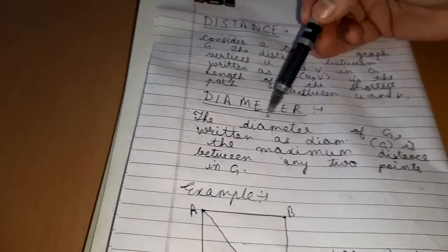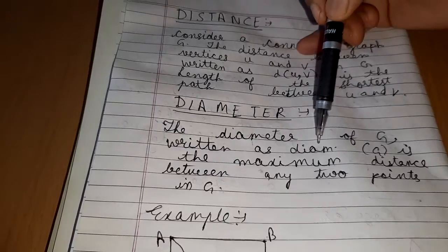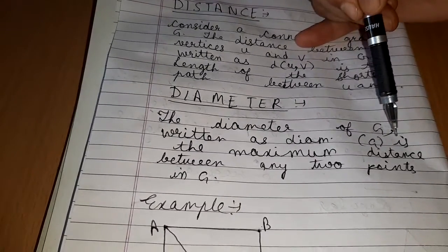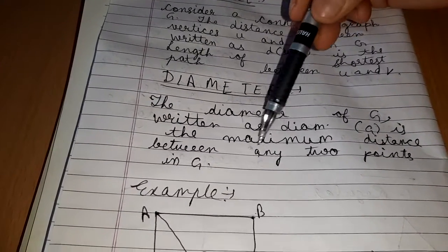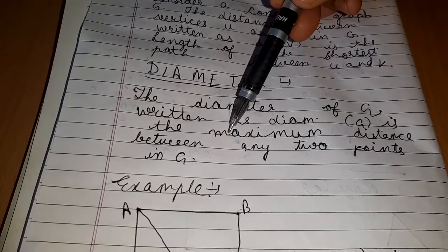Next is diameter. The diameter of G, written as diameter of G, is the maximum distance between any two points in G.